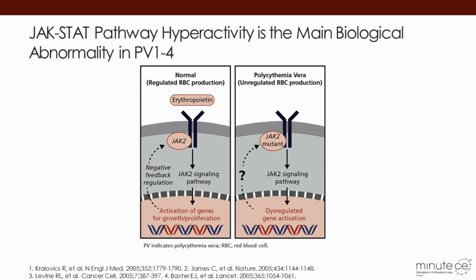In a normal situation, growth factors like erythropoietin attach themselves to receptors on the surface of bone marrow cells and activate the JAK-STAT pathway, making cells grow.